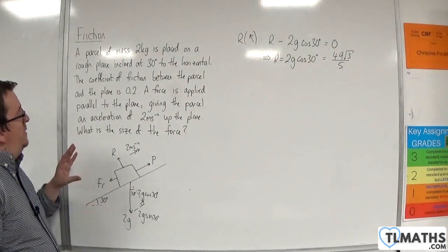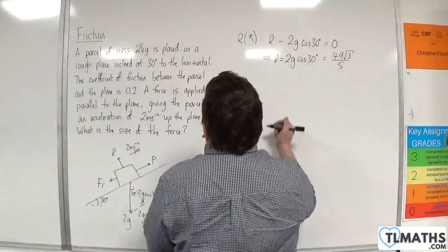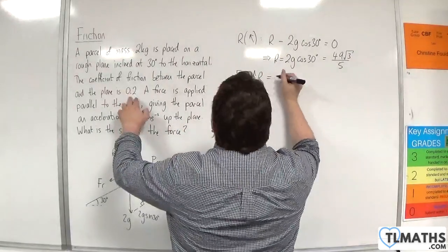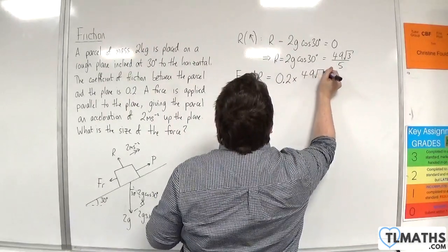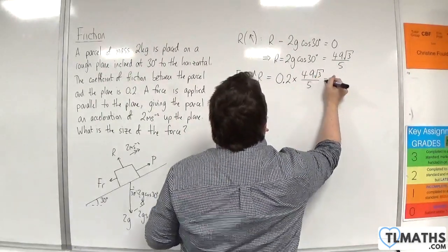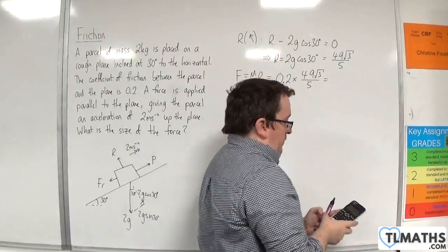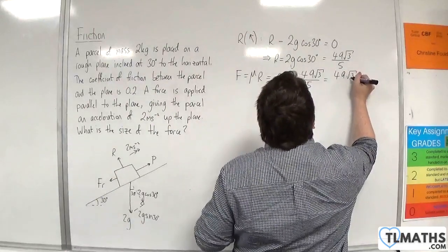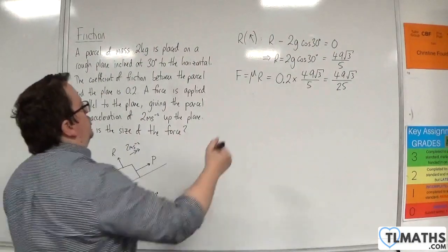Because the parcel is moving, we know that F is equal to mu times R. Mu here is 0.2, and R is 49 root 3 over 5. So of course, that would be 49 root 3 over 25. That's my friction.